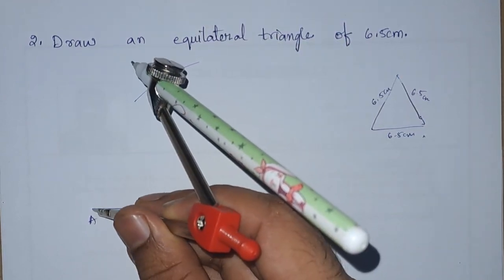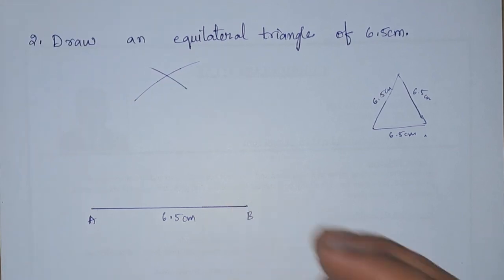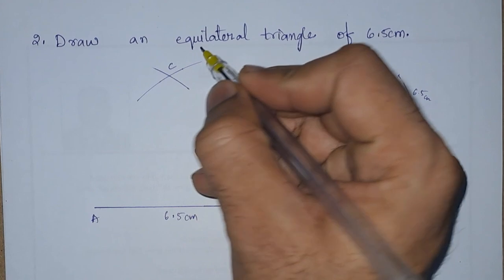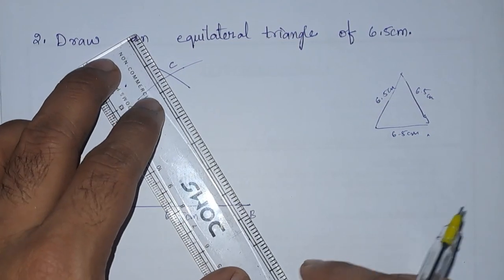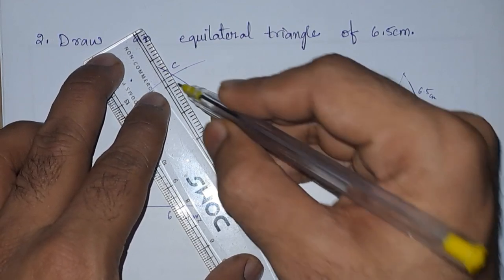And another arc from A so that will cut the previous arc, and the point where it is cutting will be C. I am using pen but you have to use pencil. This is just for visible purpose to make the video clear and visible.